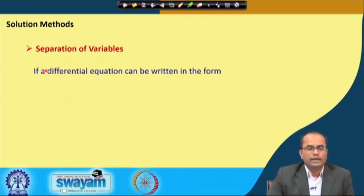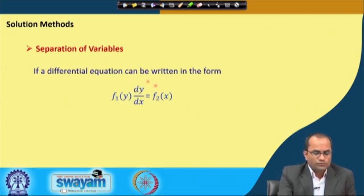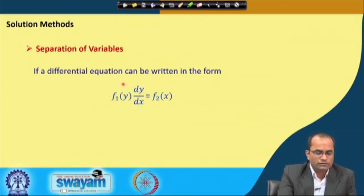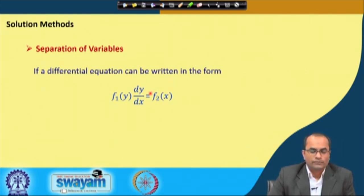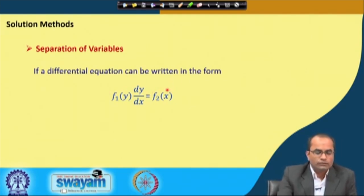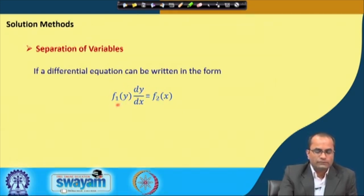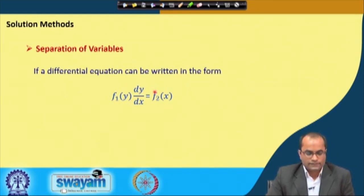If a differential equation can be written in the form f₁(y) · dy/dx = f₂(x), then we can collect everything that is a function of y to one side and the function of x to the other side. In that case, we say this equation is variable separable, because the left hand side is only a function of y and the right hand side is entirely a function of x.